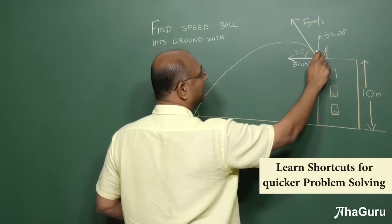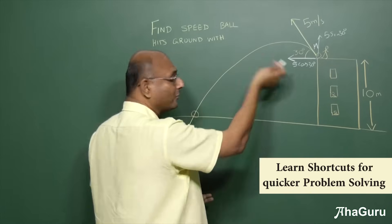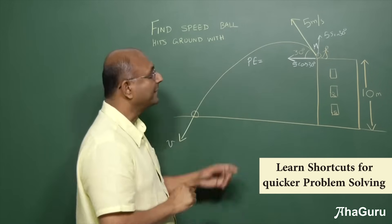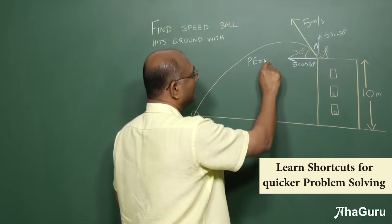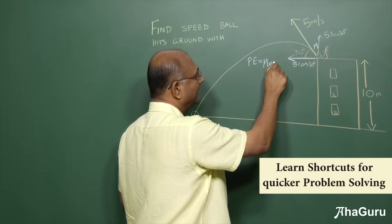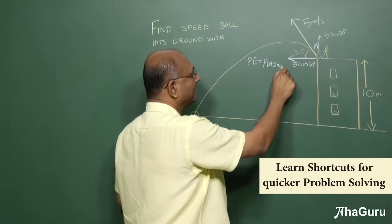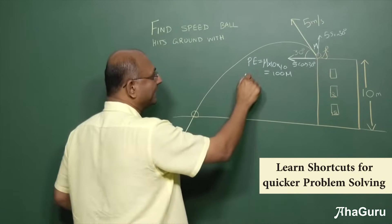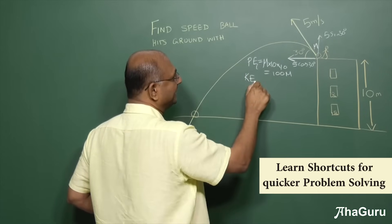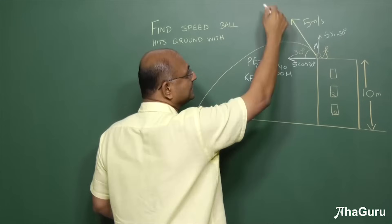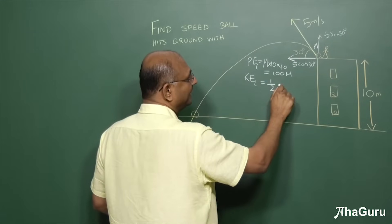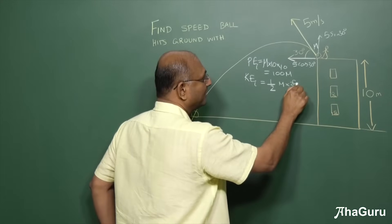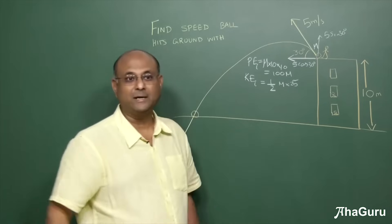At that point, let us assume the mass of the ball is M. Mass is not given. So let us think about the mass as M. What is the potential energy of the ball? Well, it is M into G which is 10 into H which is also 10. So potential energy is 100 M. What is the kinetic energy at that point? Let me call this potential energy initial, kinetic energy initial. So what is the kinetic energy at that point? Half into M into V square which is 5 square. 5 square is 25. So this is 25 into M by 2.